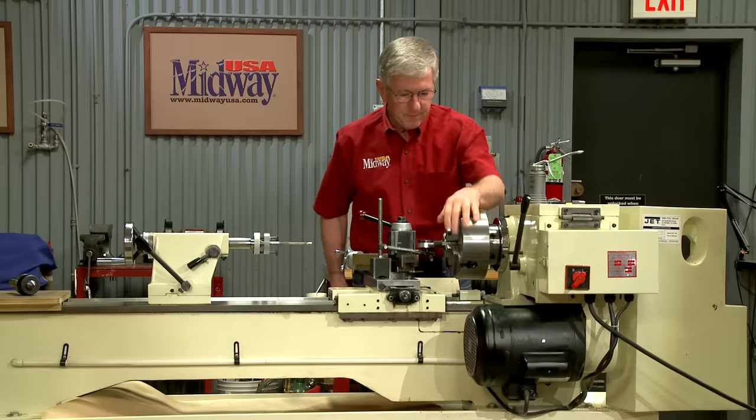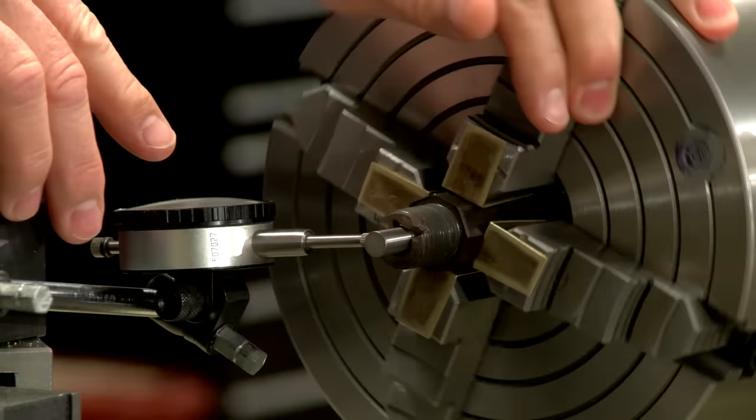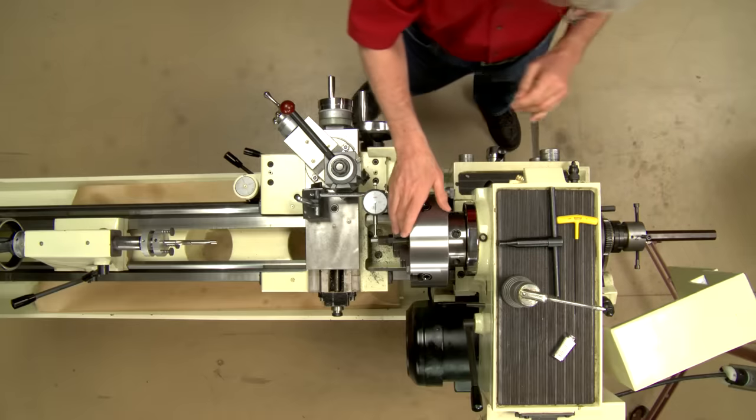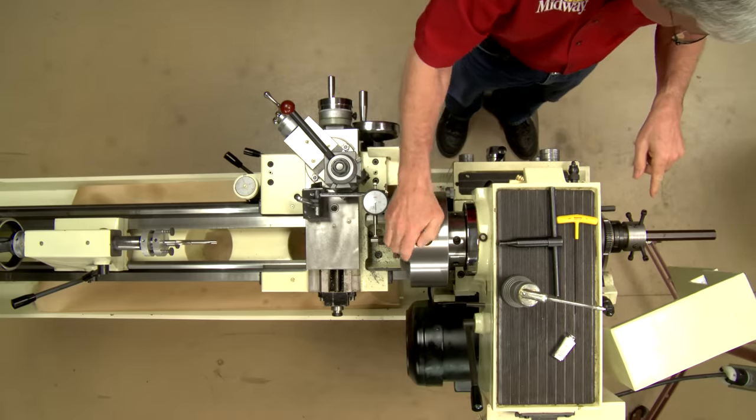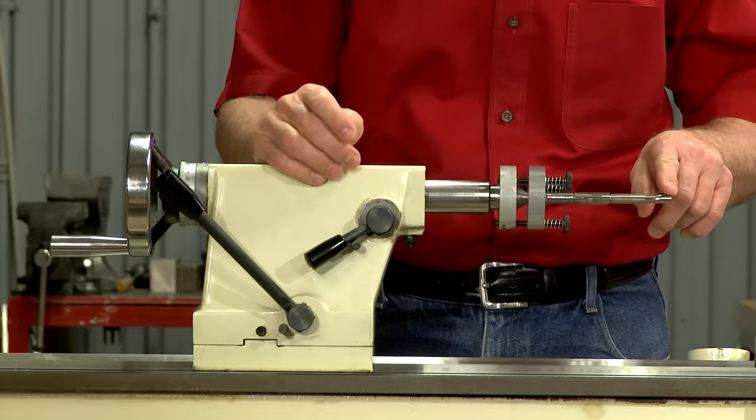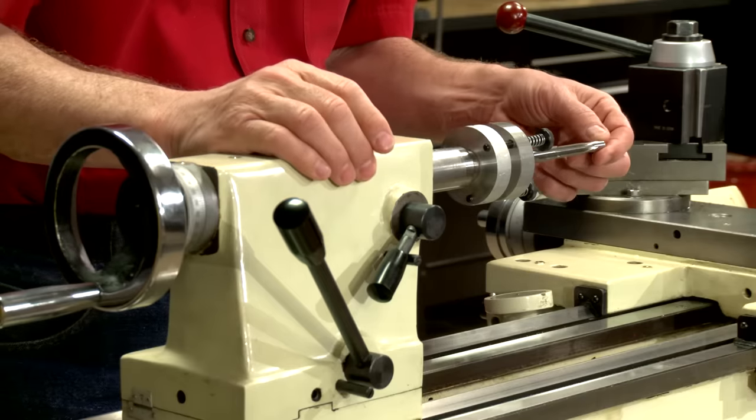The chamber end of the barrel is centered in a four jaw chuck using a plug gauge with the muzzle end held in a spider. A floating reamer holder is used to keep the reamer aligned with the bore.